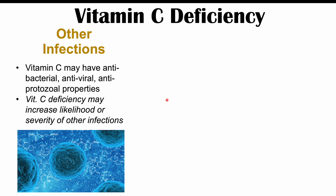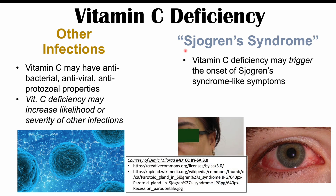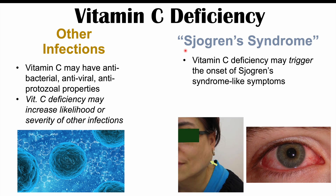In more severe cases of vitamin C deficiency — especially those that are more chronic — we can see issues with what we would call Sjogren's syndrome-like signs and symptoms. Sjogren's syndrome is itself a chronic autoimmune condition, but vitamin C deficiency can trigger something that looks like it. The typical hallmark findings are dry mouth and dry eyes.